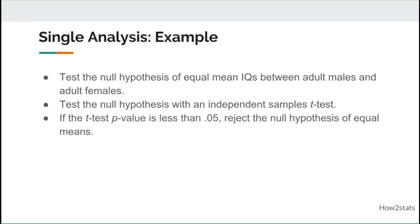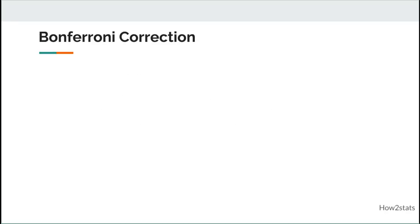So if the t-test p-value is observed to be less than 0.05, you would be in a position to reject the null hypothesis of equal means, which implies that there is probably a difference in the population.